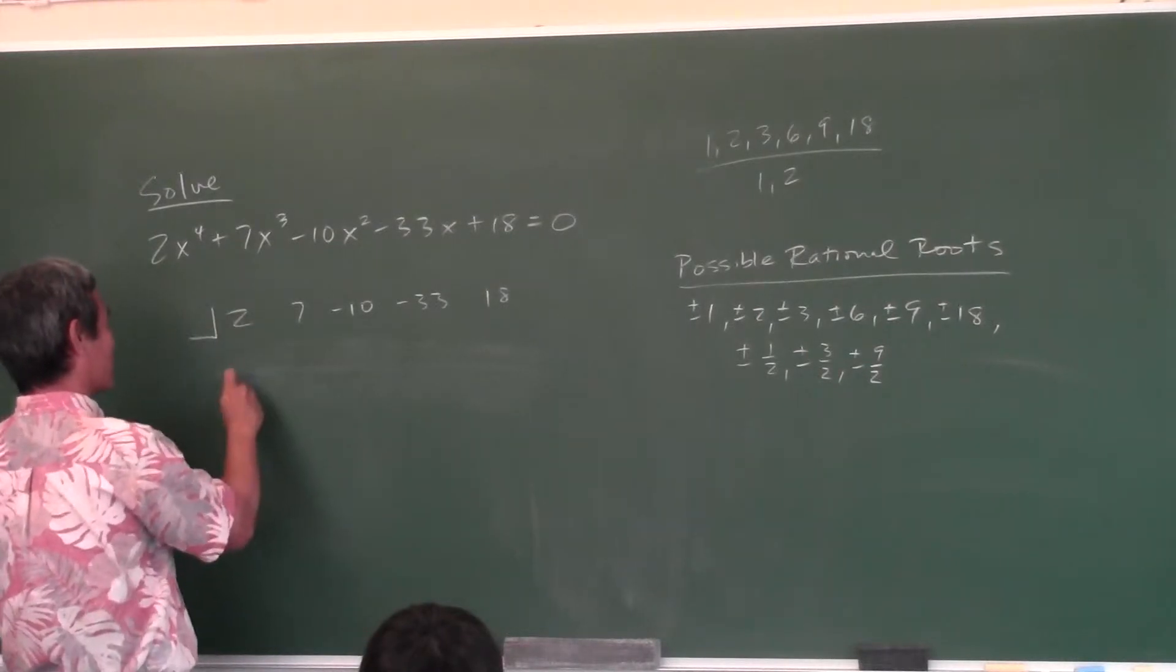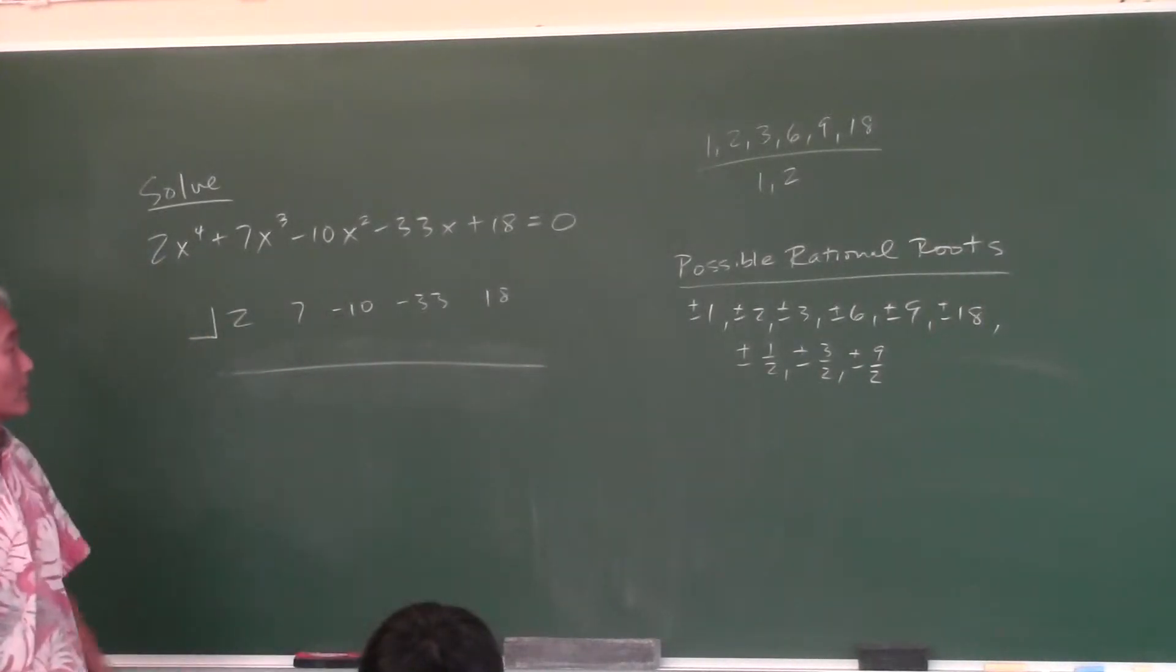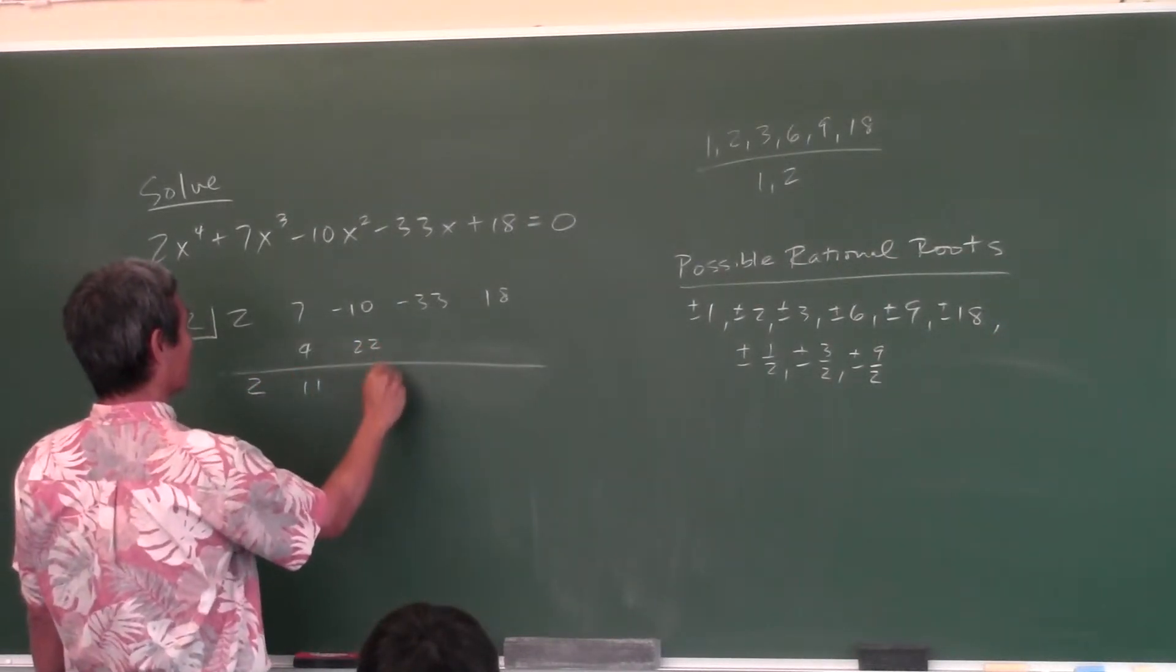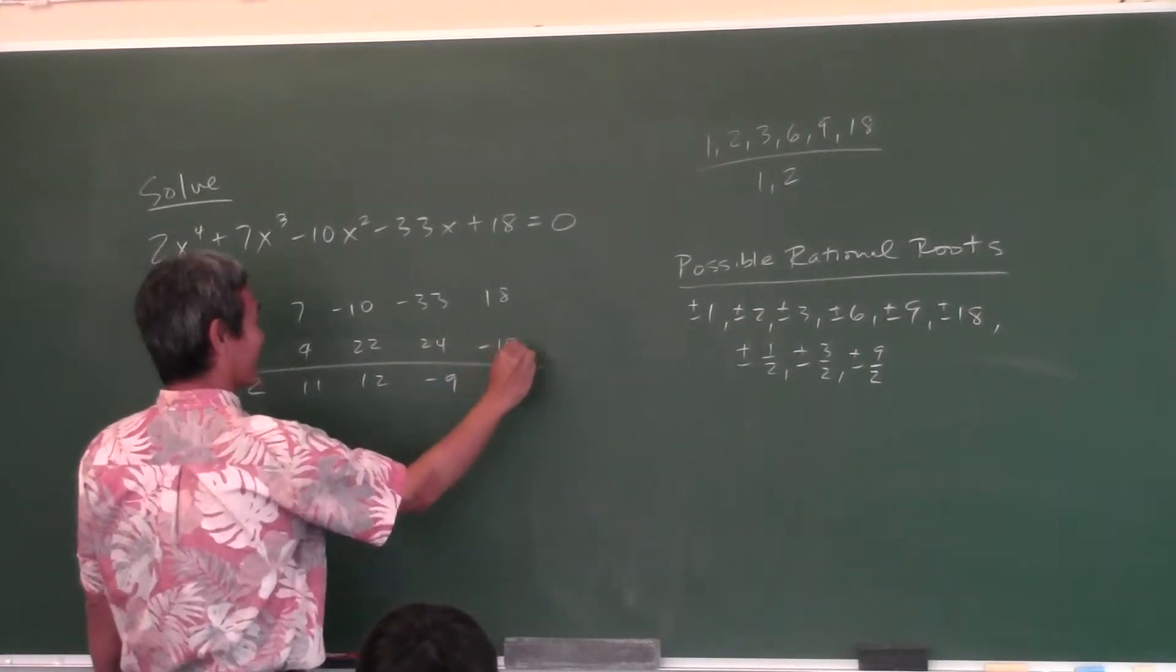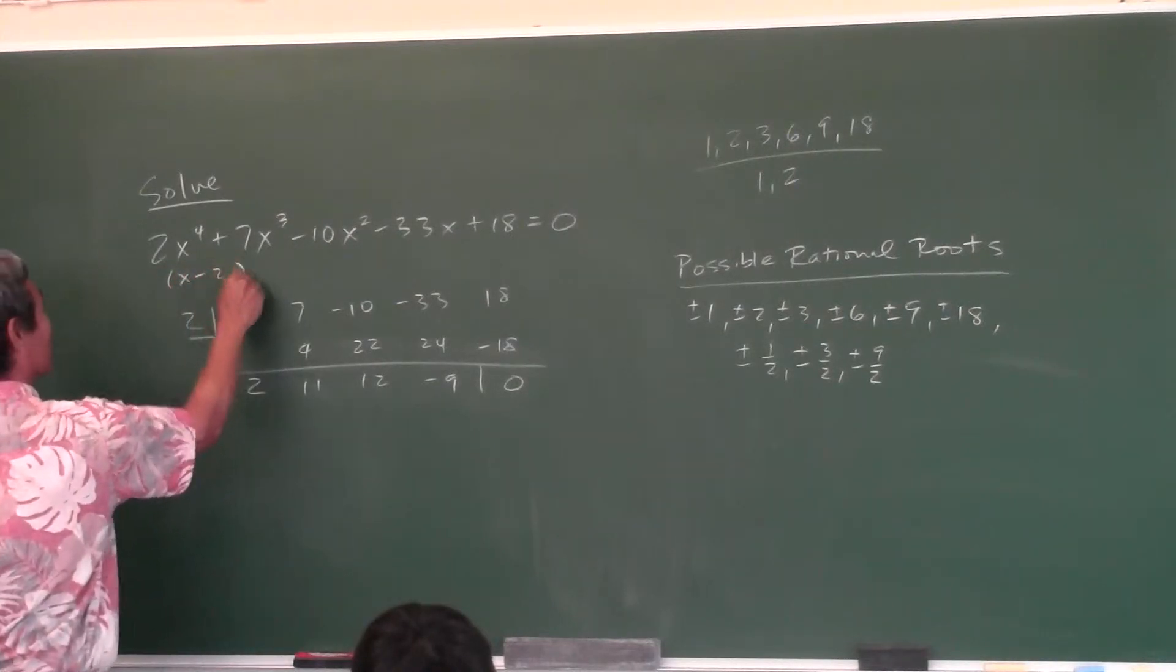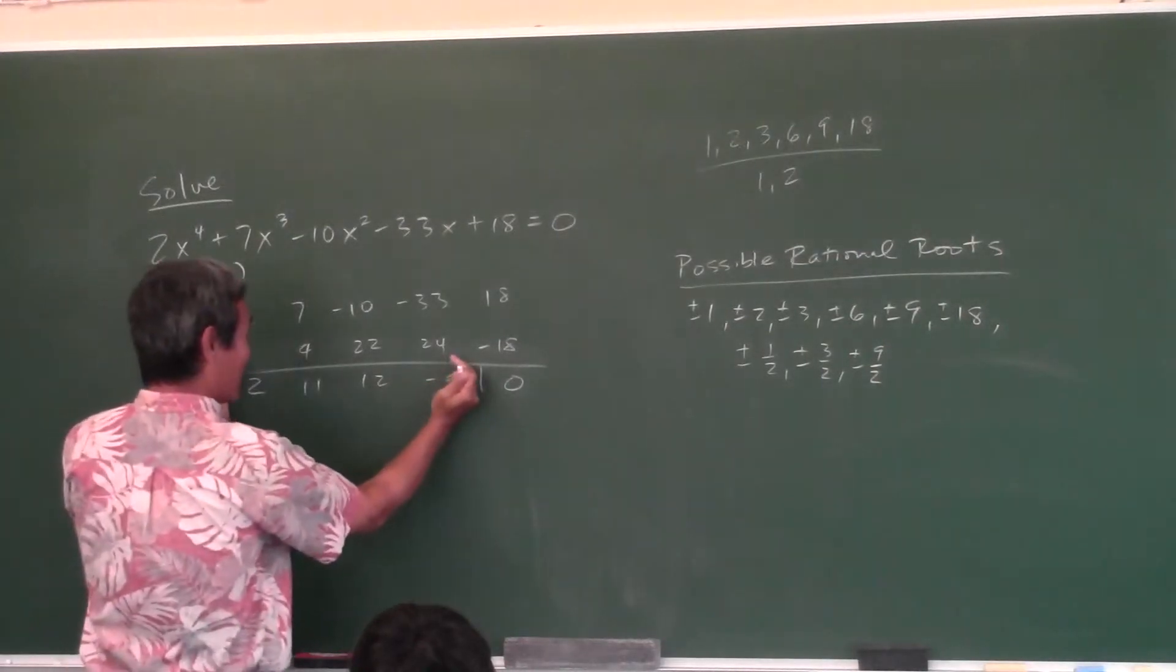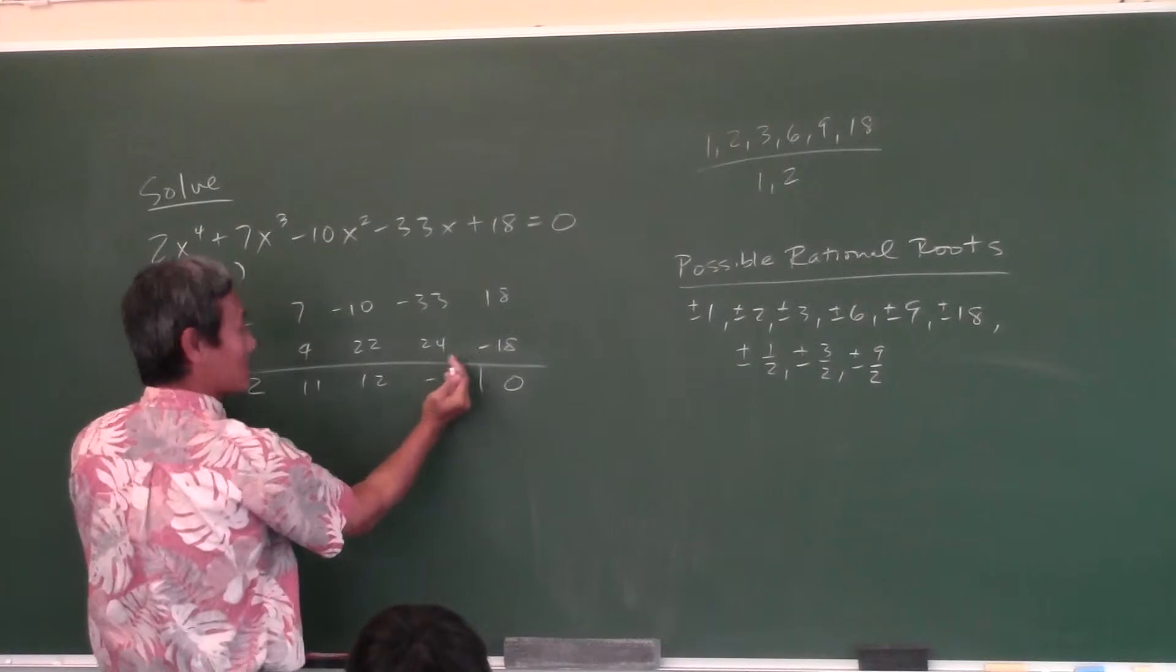So what number should I try next? Now usually, I don't like to try fractions, so I'm going to go on to 2. 4, 11, 22, 12, 24. Oh, look at that! The remainder came out 0. So that means x minus 2 is one of the factors. That means 2 is a root. Now, we're down to this now. See this? We started with the fourth degree, but now we're down to this. This is just a cubic. And then you do the whole process again. So you look at factors of 9 over factors of 2. Those are the possible rational roots.